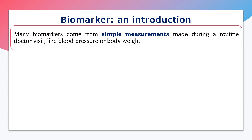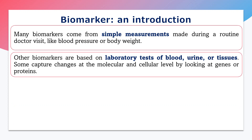Many biomarkers are given by simple tests, like whenever we visit doctors for routine tests — such as blood pressure, body weight, and body temperature. These are normal biomarkers. But there are some biomarkers which require specific tests from specific samples, like blood samples, urine samples, or tissue samples.